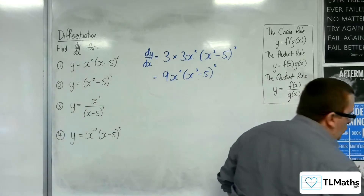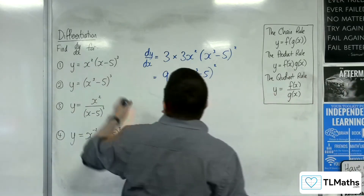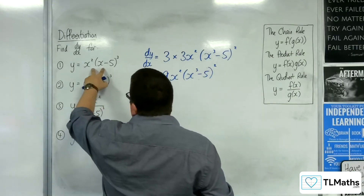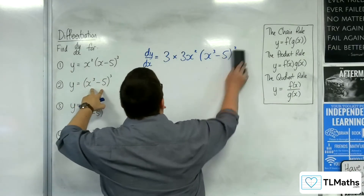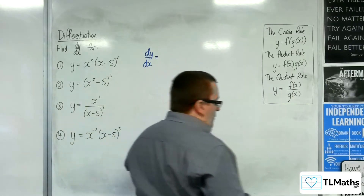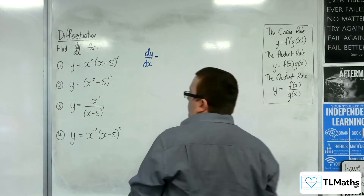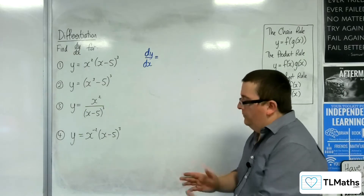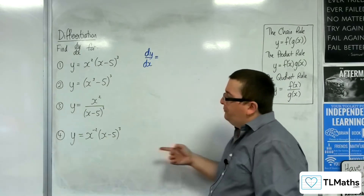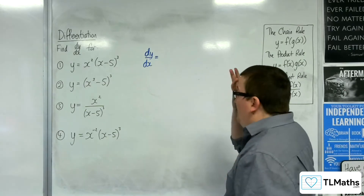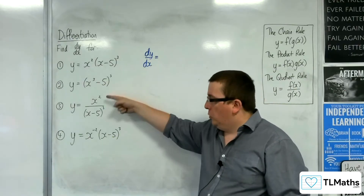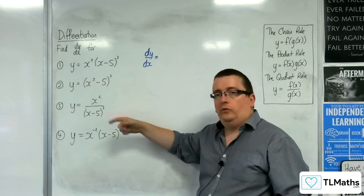So that second one is just the chain rule. We've had product rule combined with chain rule for number 1, and chain rule alone for number 2. Number 3: y equals x squared over (x minus 5) cubed.